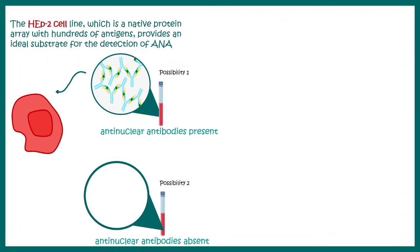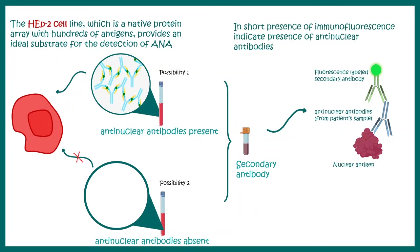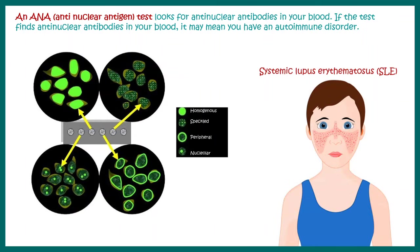If a patient sample has no anti-nuclear antibodies, there would be no detection. After that, secondary antibodies are added to the samples which ultimately allow us to determine the immunofluorescence pattern. The immunofluorescence pattern is the key determination factor of these tests — in short, presence of immunofluorescence is the measure for the ANA test. A scientist or medical individual can look at different anti-nuclear antibody patterns and make inferences about the disease.